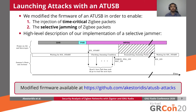This is the high-level description of all the proof-of-concept attacks we implemented by modifying the firmware of our AT-USB, which we have made publicly available in a GitHub repository. The only difference is that for some of the attacks, we followed the jamming of a packet with the spoofing of a MAC acknowledgement to confuse the sender of the legitimate packet.